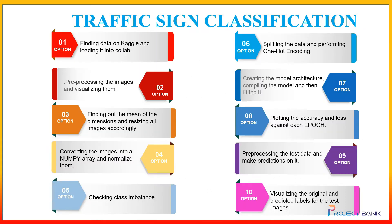The steps involved to solve this problem are: first, finding the data on Kaggle and loading it into Google Colab. We will discuss how to connect Google Colab with your Kaggle account. After that, we will pre-process the images to normalize them, identify the different classes, and then visualize them. We will also find the mean dimensions of the images and resize all images to the same size and format.